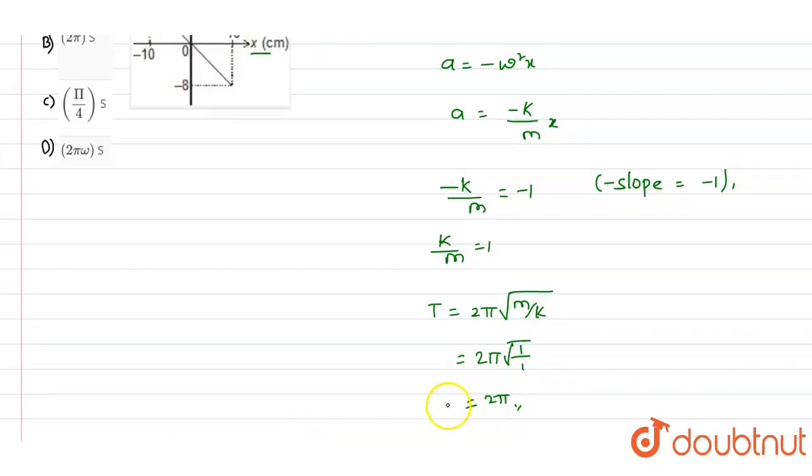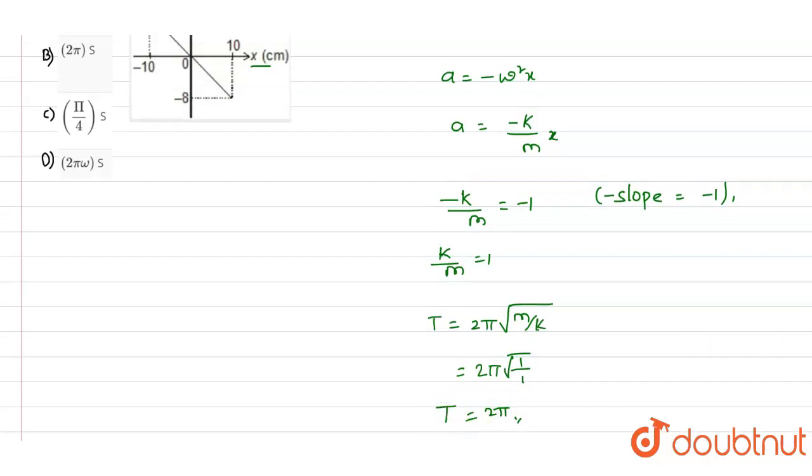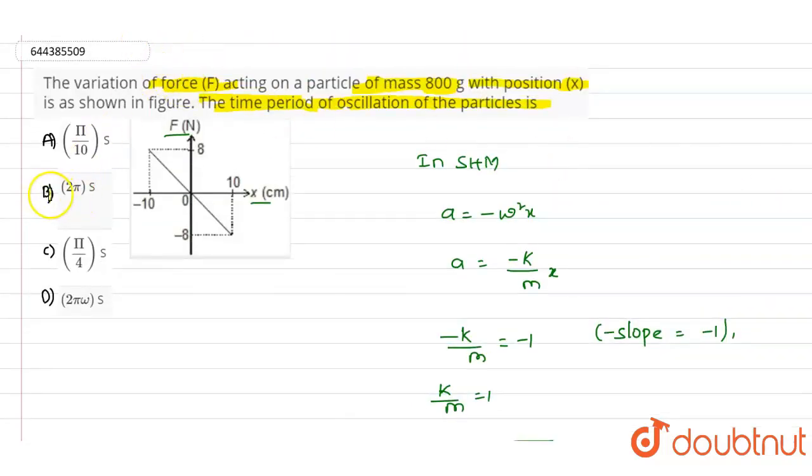So here this 2 pi is nothing but the value of the time period capital T. So out of these four options if you see option B we have 2 pi, so option B is the correct answer for this question. Thank you.